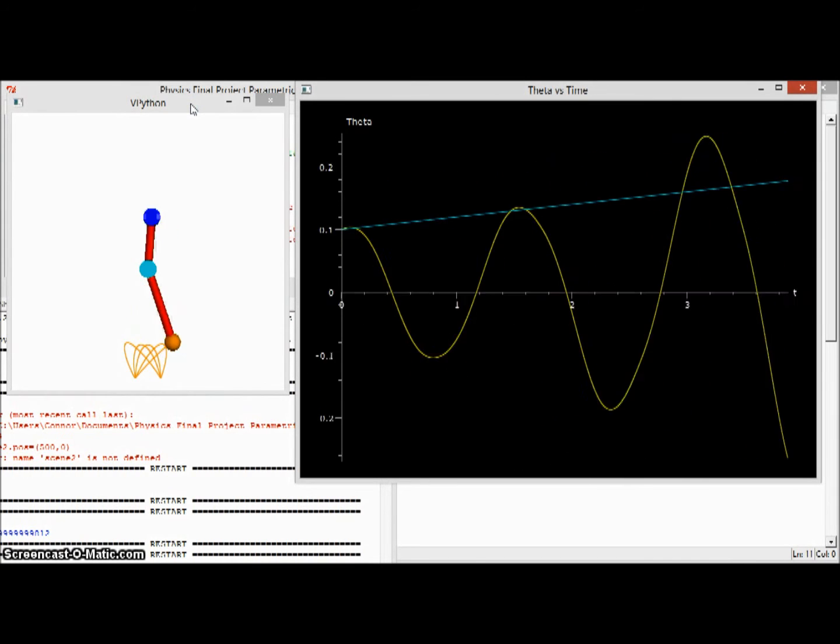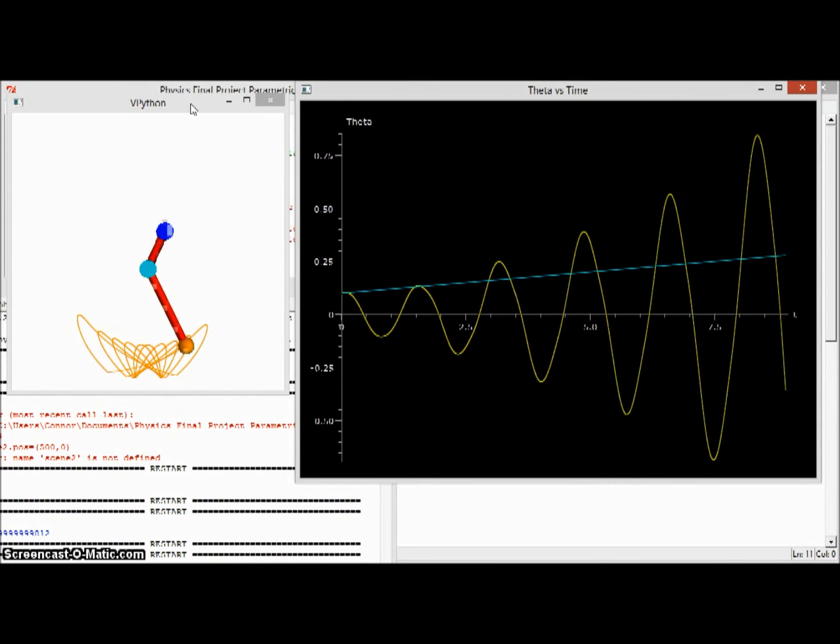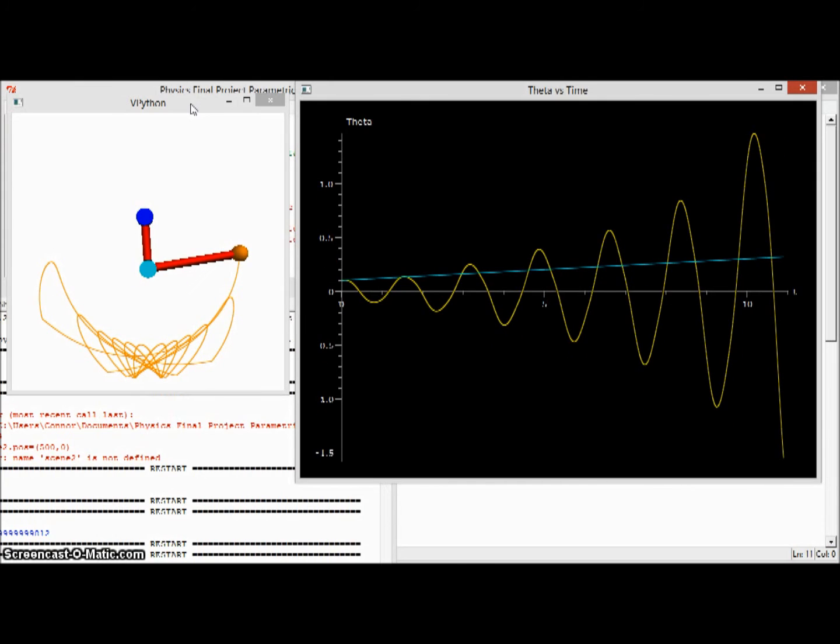As you can see, the blue ball varies its position, which causes the distance between the pivot point, which is the teal ball, and the orange sphere to change. If you look at the graph on the right,